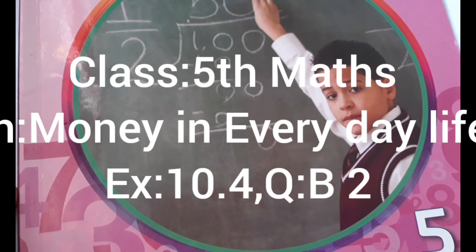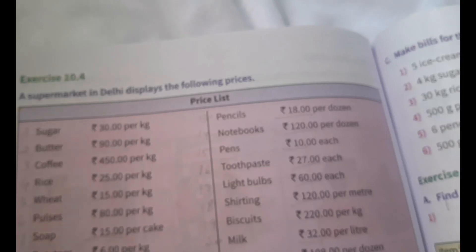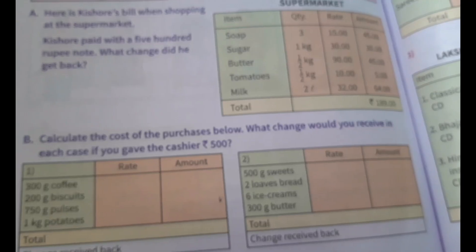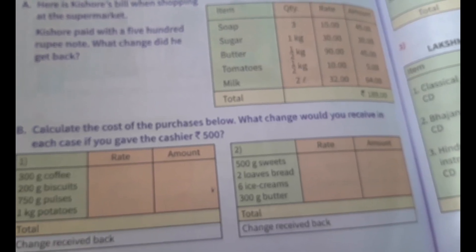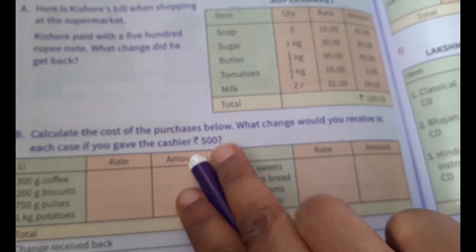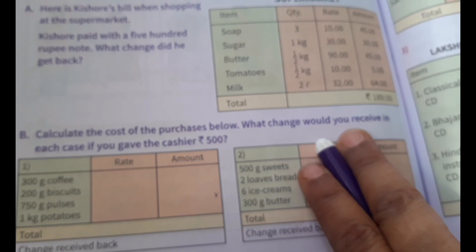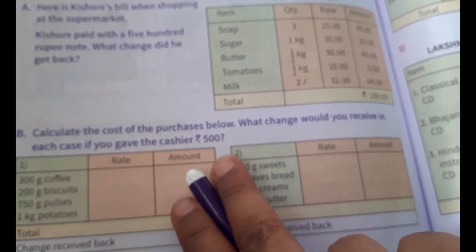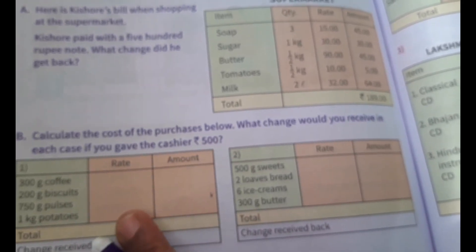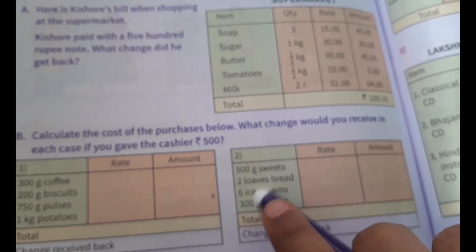Hello children, this is fifth standard maths, chapter name is Money in Everyday Life. In that, exercise 10.4b. Calculate the cost of the purchases below. What change would you receive in each case if you give the cashier rupees 500?